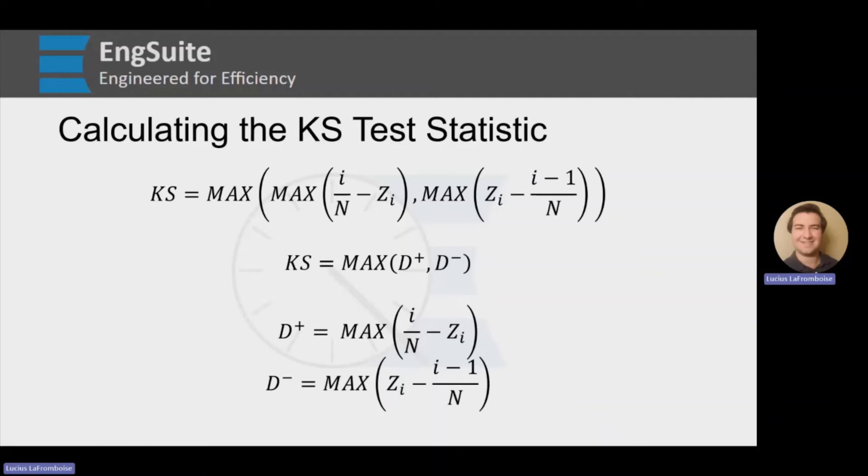So let's break this down a little bit more. Let's replace this max and this one with some variables. We'll call the first one D plus and the second one D minus, where D plus is just the max of this and D minus is the max of that.